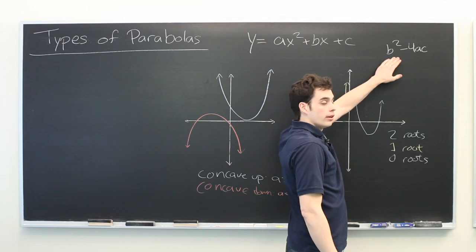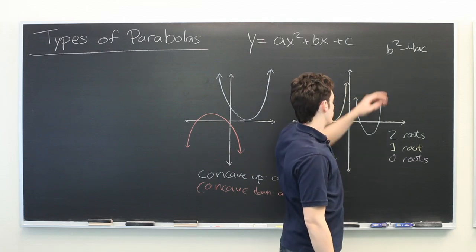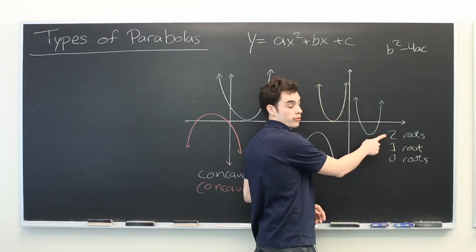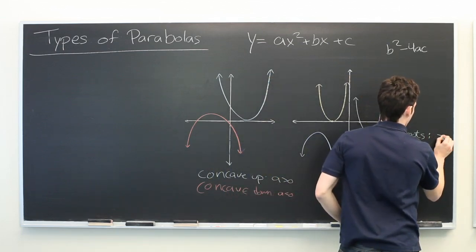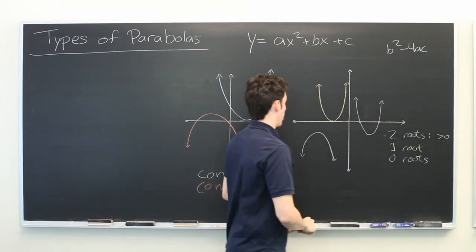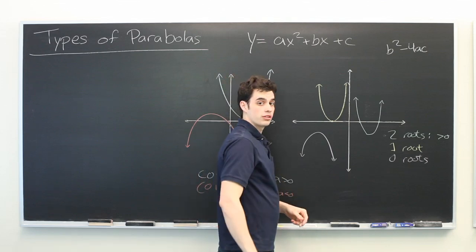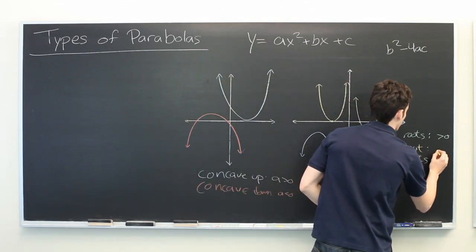If this number is greater than zero, the parabola will have two real roots. If the number is equal to zero, the parabola will have one root.